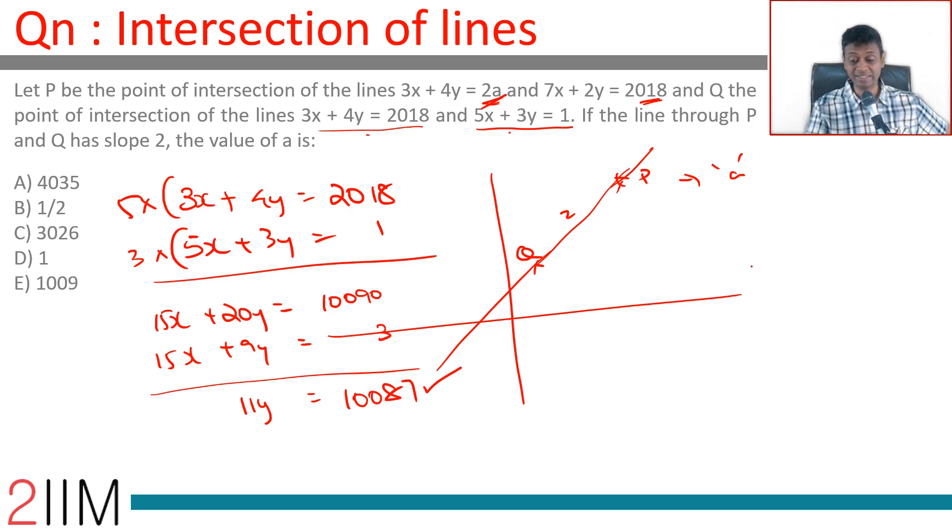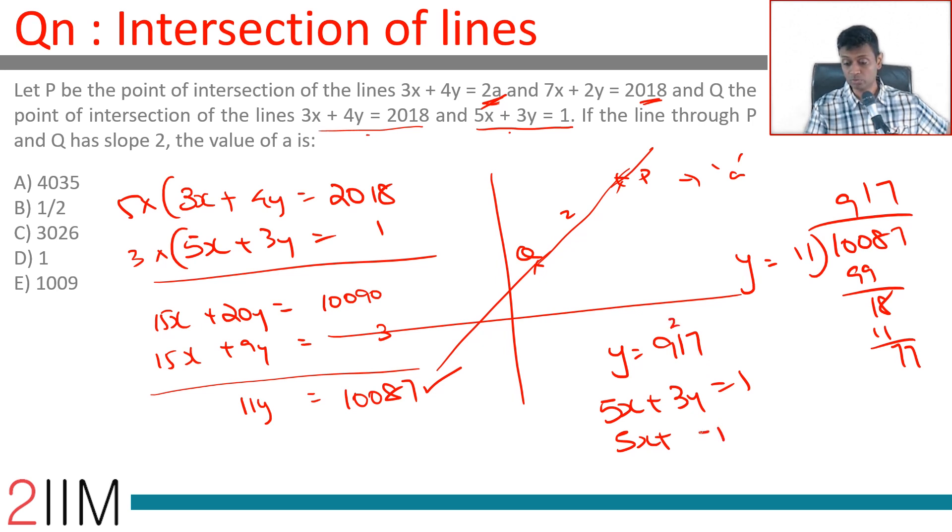It's a multiple of 11 thankfully, so we can find y. y is 10087 divided by 11, which equals 917. 5x + 3y = 1.